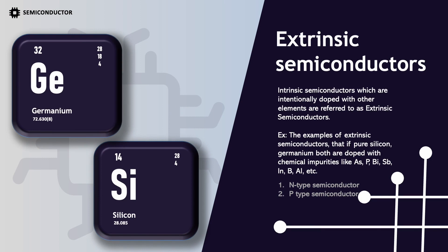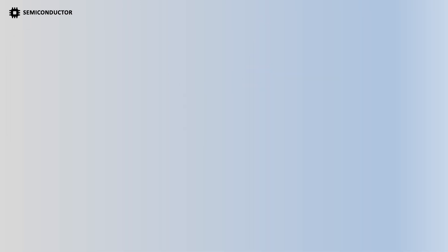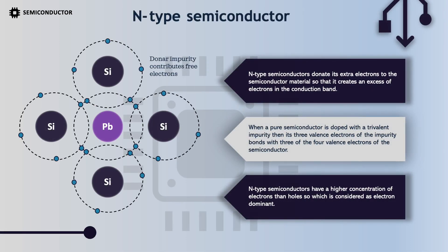Extrinsic semiconductors: Intrinsic semiconductors which are intentionally doped with other elements are referred to as extrinsic semiconductors. For example, pure silicon and germanium can both be doped with chemical impurities. N-type semiconductors donate extra electrons to the semiconductor material, creating an excess of electrons in the conduction band. When a pure semiconductor is doped with a pentavalent impurity, the 3 valence electrons of the impurity bond with 3 of the 4 valence electrons of the semiconductor.